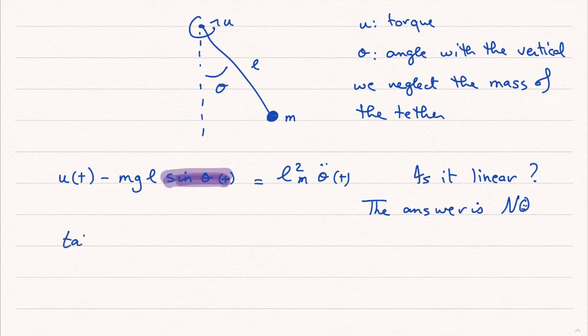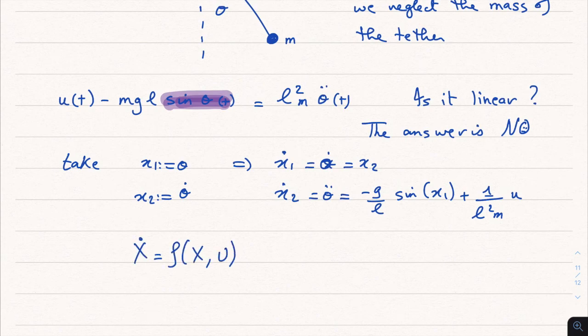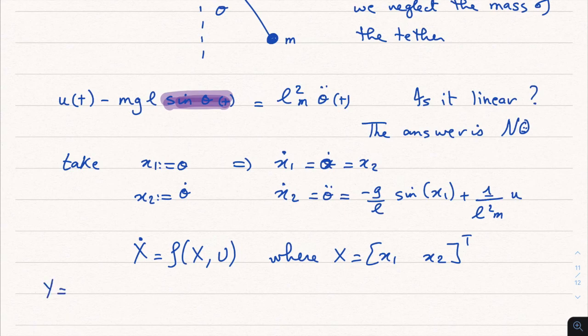Let us take x1 equal theta and x2 equal theta dot. So I will derive as usual and using these equations you will find this state representation. So x dot equal a nonlinear function f depending on x and u, y equal x1.